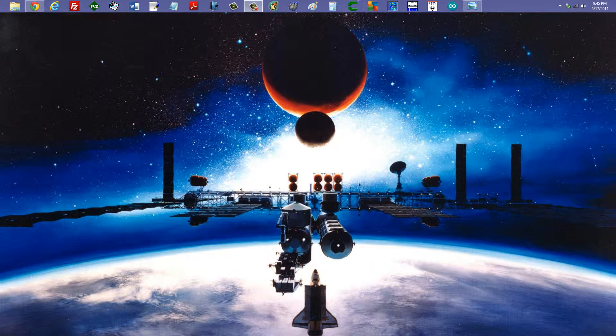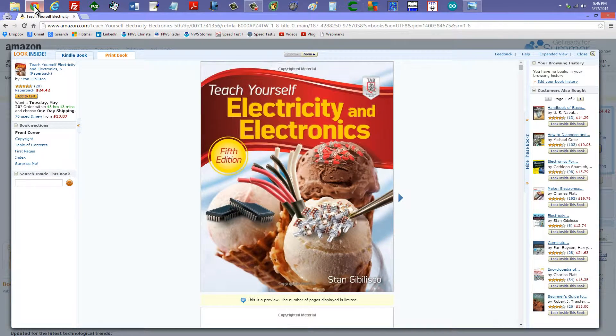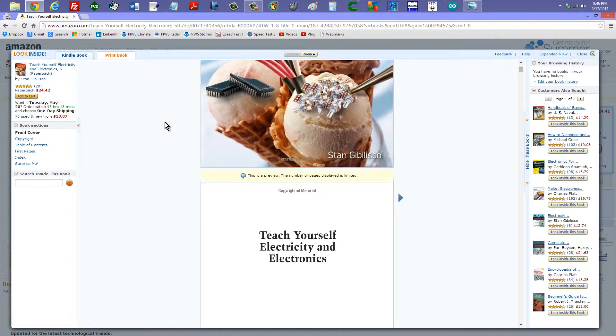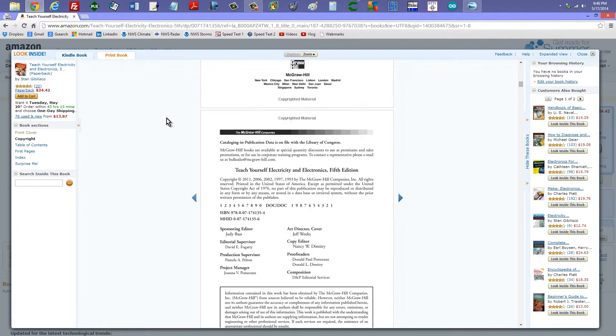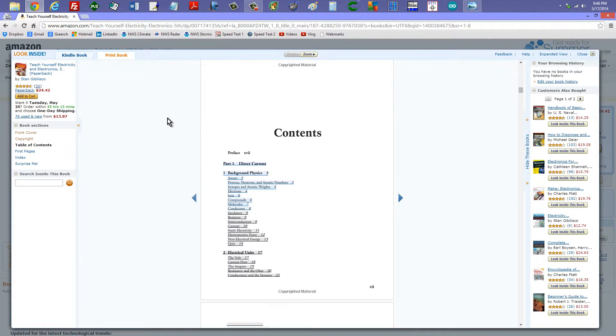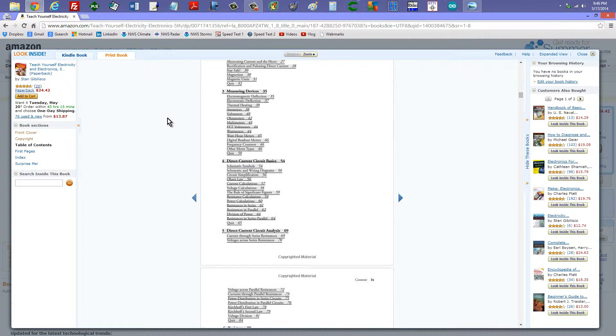Stan Jibalisco here to talk about five basic fundamental waveforms that you will encounter in electricity and electronics. You will find more information about all of this stuff in this book, Teach Yourself Electricity and Electronics, 5th edition. You will find this information in chapter 9. This is the Amazon site for the paperback version of that book.